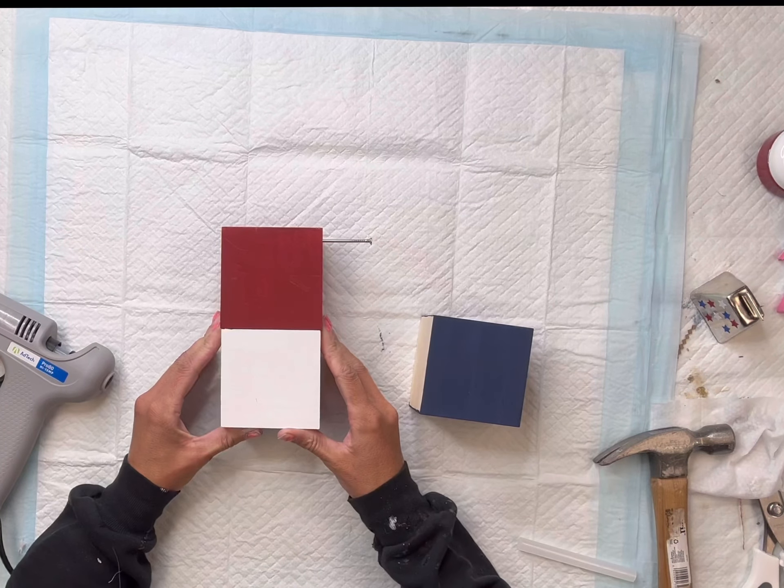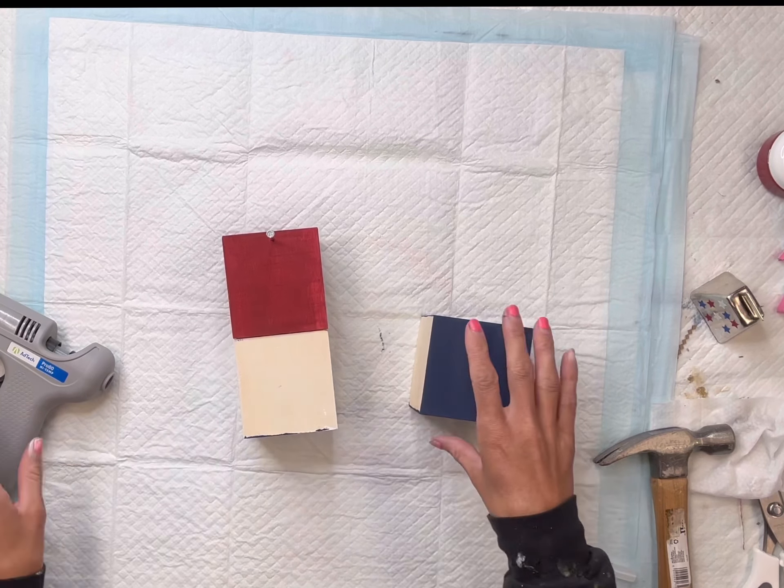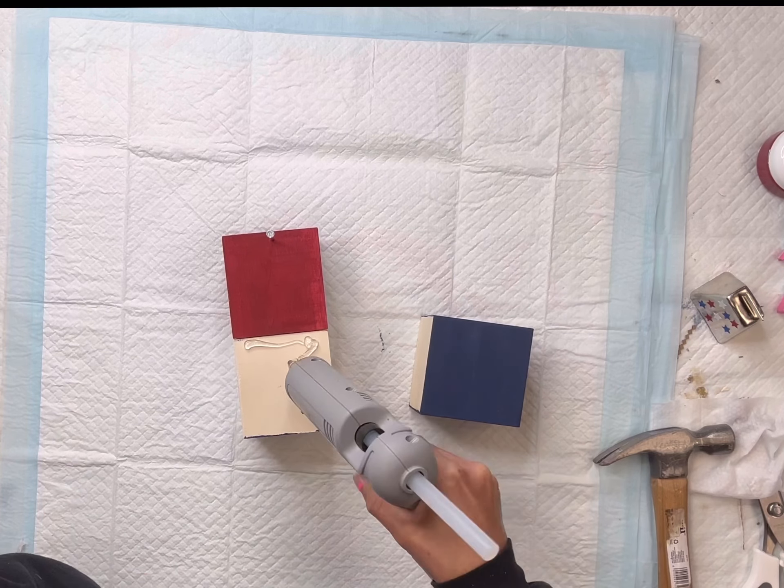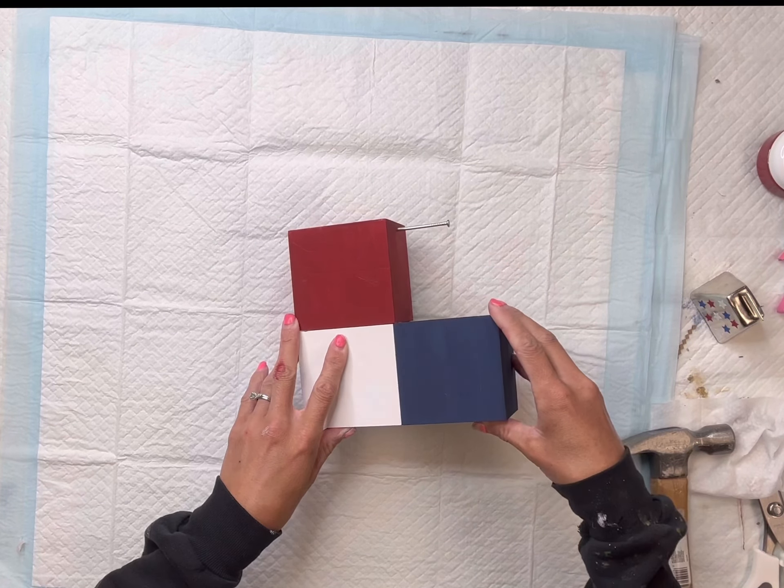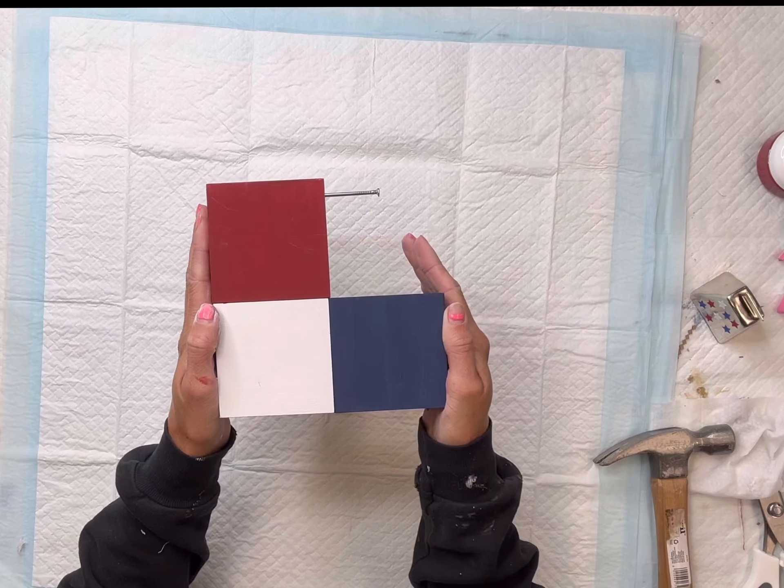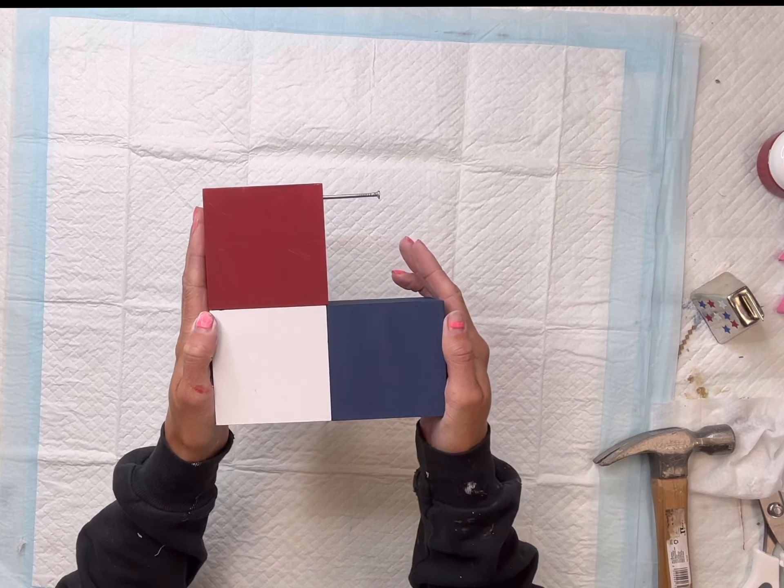And then I'm going to glue my pieces together. The red goes on the top. I place the white right below that, and then the blue to the right of the white.